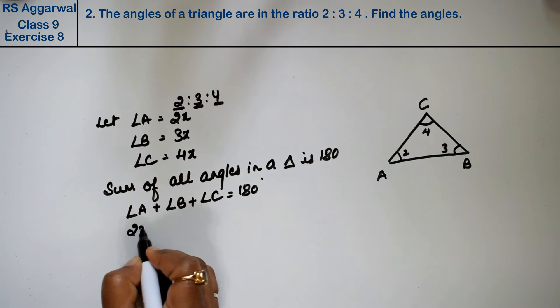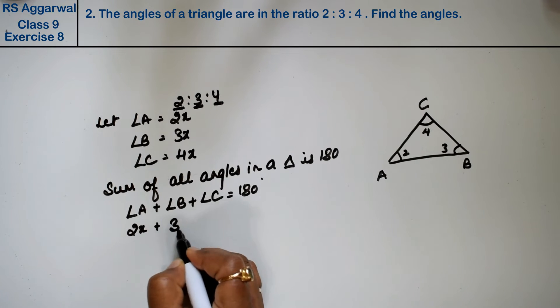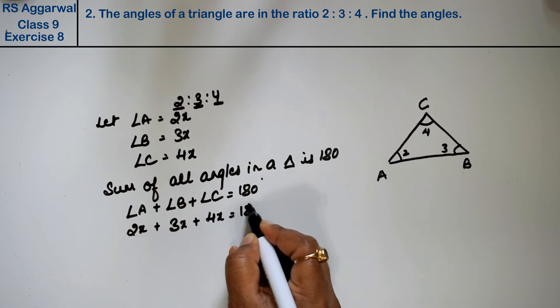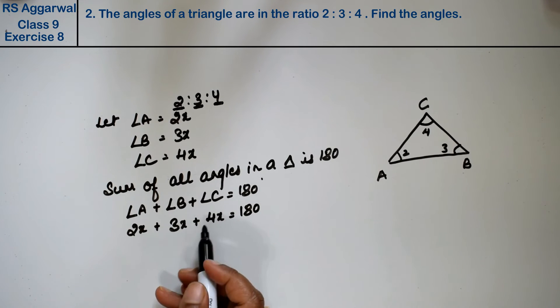Angle A is 2x, angle B is 3x, and angle C is 4x, so 2x + 3x + 4x = 180. Let's add all these x terms together.